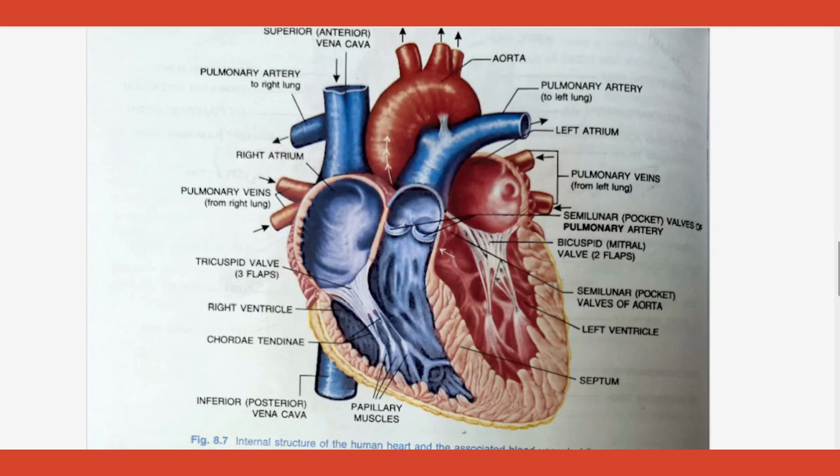Left and right side blood should not mix with each other. There is a muscular wall running from one end to the other separating the right hand side from the left hand side — this is called the septum. There are also certain blood vessels coming into the right atrium and left atrium separately. We will go with the left hand side first.